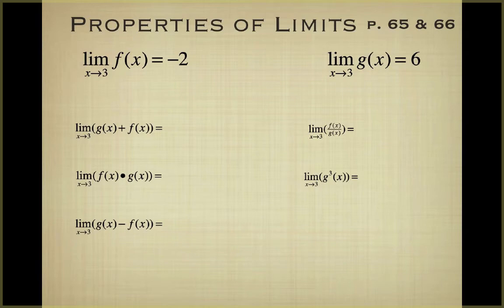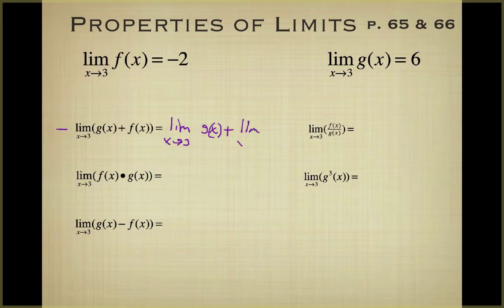When you do this, I need to see your properties being used, so you need to write it out. Here we have the limit as x approaches 3 of g(x)+f(x). We break this up using our addition property into the limit as x approaches 3 of g(x) plus the limit as x approaches 3 of f(x). We know what these limits are, so we plug them in: 6 plus negative 2 is 4.